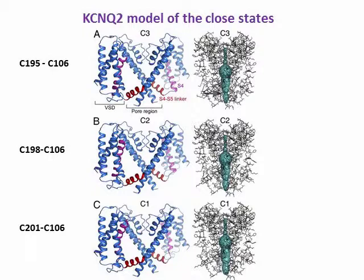Initial attempts to derive a resting state model of KCNQ2 based on the previously published model of KCNQ1 failed because it did not fit all our experimental constraints. This is probably because KCNQ channels display more than one closed state. To overcome this limitation, three distinct closed state models of KCNQ2 were constructed by applying each of our cadmium bridge constraints.